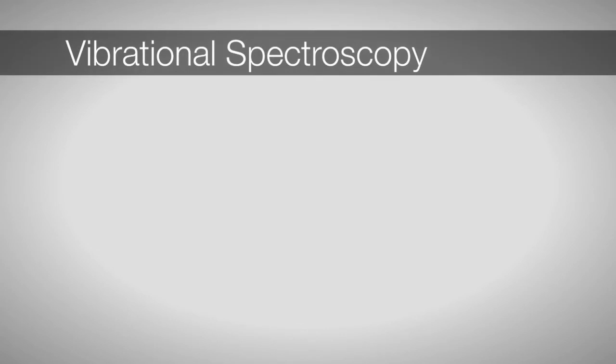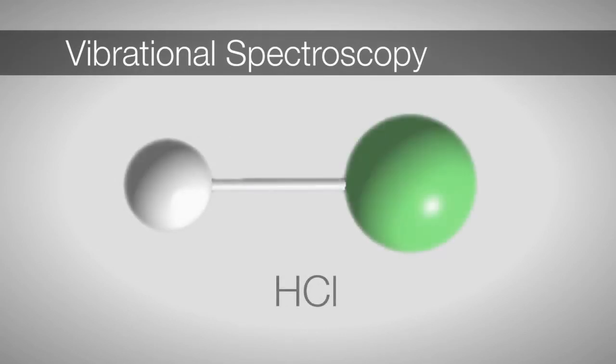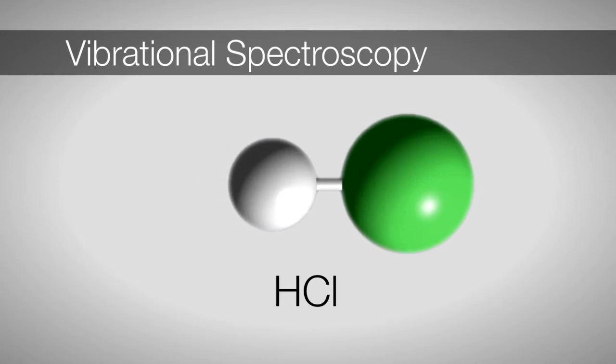Let's start with some basics for vibrational spectroscopy. We can envision HCl as two simple spheres connected by a spring. Here, chlorine is green and hydrogen is white. At first glance, chlorine appears to be stationary because it's much more massive than hydrogen, but both atoms are in fact moving during the vibration.